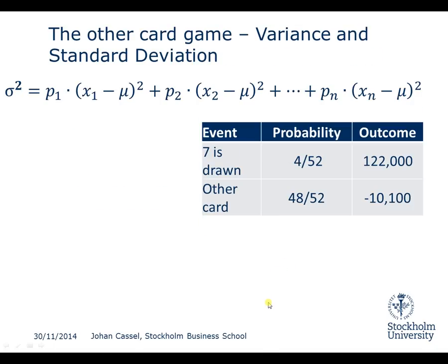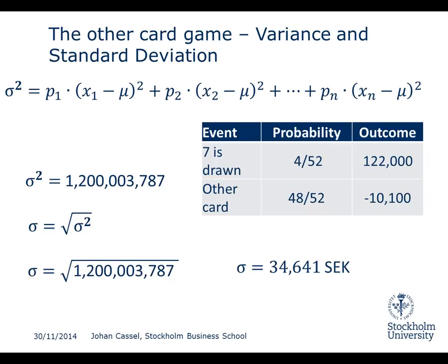Let's compute the variance and standard deviation of the other game using the same formula and steps. You find that the variance is approximately 1.2 billion — and again the unit is squared Swedish Kronor. The standard deviation is found by taking the square root of the variance, giving us approximately 34,641 Swedish Kronor. We can now see that the standard deviation, which measures how much the normal outcome differs from the expected value, is much larger in this case.